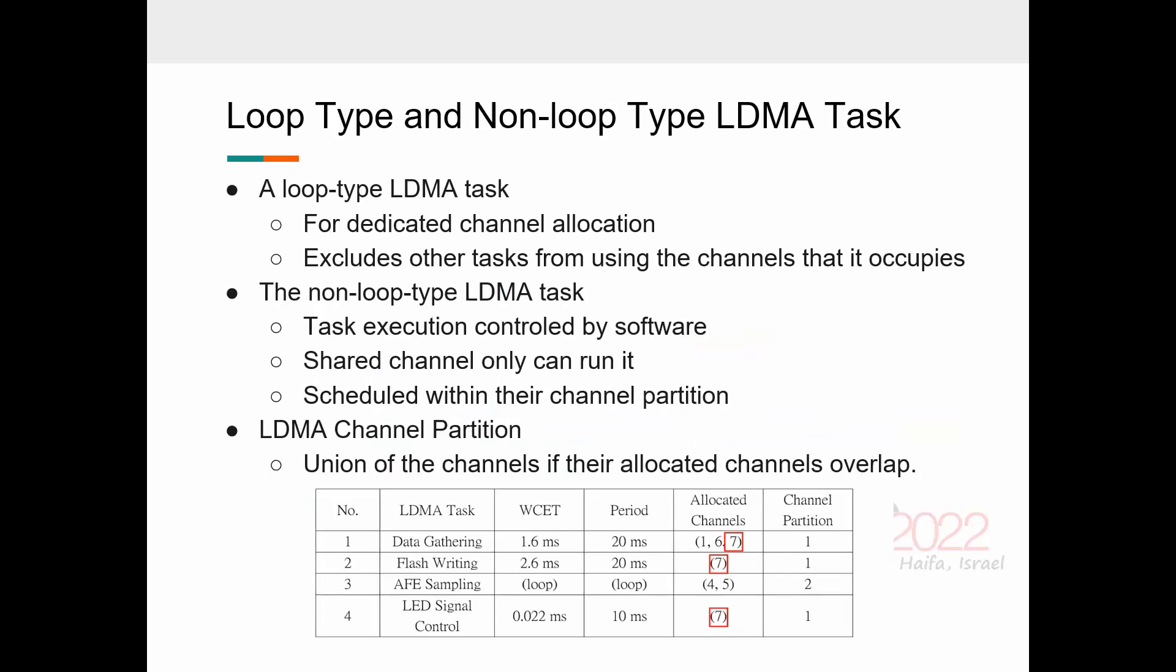Offloading can be done in the form of either a loop type or non-loop type LDMA task. A loop type LDMA task is for dedicated channel allocation. The LDMA channel repeats executing the descriptors. So the loop type task excludes other tasks from using the channels that it occupies. The non-loop type LDMA returns control to software before starting the next LDMA task execution. In our LTS, a shared channel can run only non-loop type LDMA tasks, which are scheduled within their channel partition.